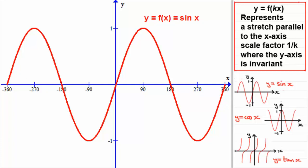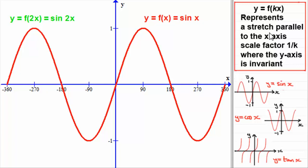What happens if we take this graph and apply y equals f of 2x? That is, we replace the x in sine x with 2x, so we get sine of 2x. According to this transformation — which applies to all graphs, whether trigonometric or otherwise — k is 2. This represents a stretch parallel to the x-axis, scale factor 1 over 2 (scale factor one half), where the y-axis is invariant.